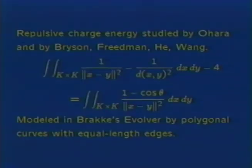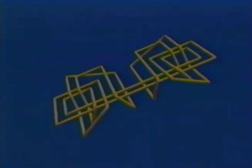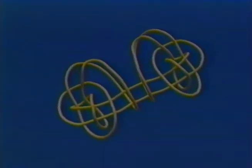Our energy is like the potential energy obtained if we spread electric charge along the curve. Minimizing it makes the different strands repel each other. The particular energy we use is one studied by O'Hara and by Friedman et al., and is a double integral over pairs of points on the curve of one over distance squared. We model this experimentally with polygonal curves whose edges have equal length. This energy is scale invariant, and also invariant under Möbius transformations of space.